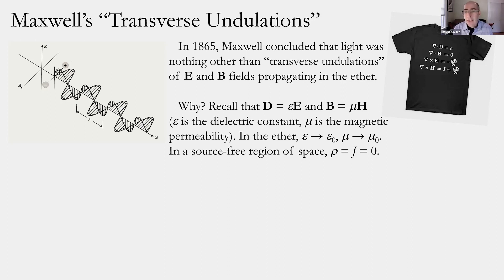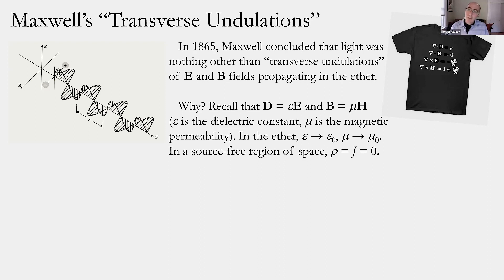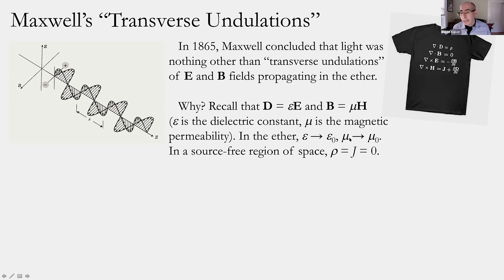These terms of proportionality — in modern parlance, epsilon, the Greek letter epsilon — relate the displacement field to the electric field; that's what we call the dielectric constant, or permittivity. To Maxwell's circle, it was like a spring constant, characterizing the responsiveness of the ether or some other material. Likewise, mu, the magnetic permeability, was also a different kind of spring constant. Within the ether, these took on simple constant values: epsilon became epsilon naught, and mu became mu naught.